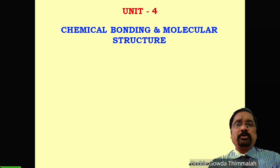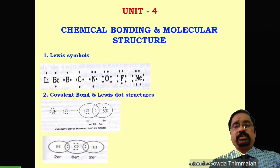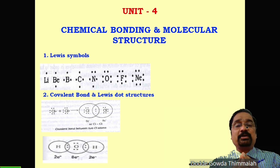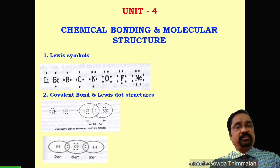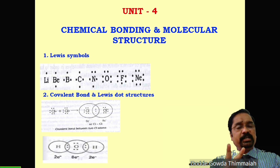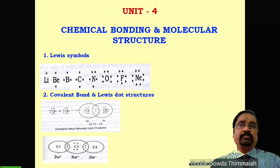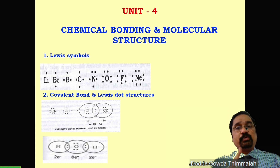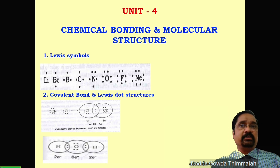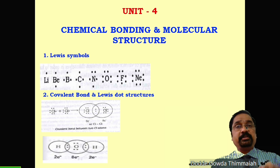Let us study the important topics in this chapter. The very first one is Lewis dot structure, which indicates the number of valence electrons around the symbol of the atom. For example, lithium has atomic number 3, electronic configuration 1s², 2s¹ — there is only one valence electron, so one dot is written around the lithium symbol. Fluorine has atomic number 9, with 7 valence electrons — so 7 dots are written around the symbol F.